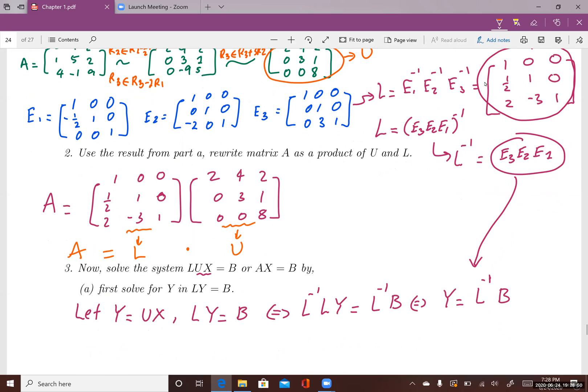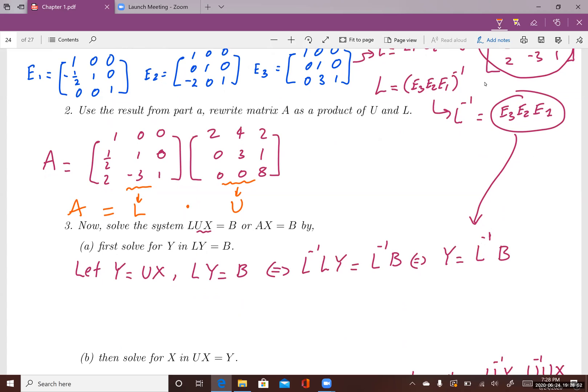We can use these two factors here, L and U, to solve the system AX equals B in a different way. We know that A can be rewritten in terms of L and U. So instead of AX equals B, I just write LUX equals B.